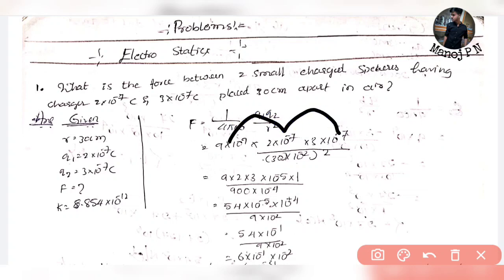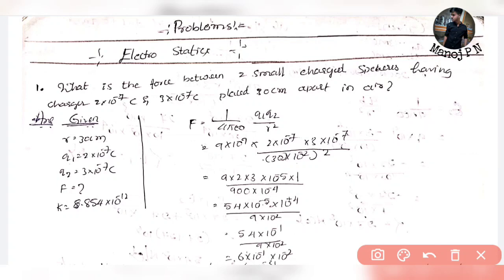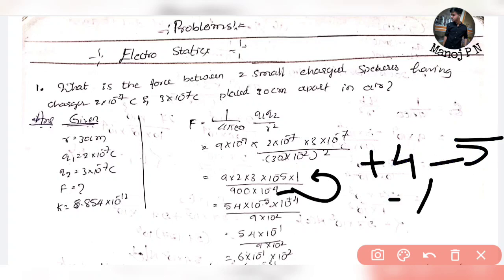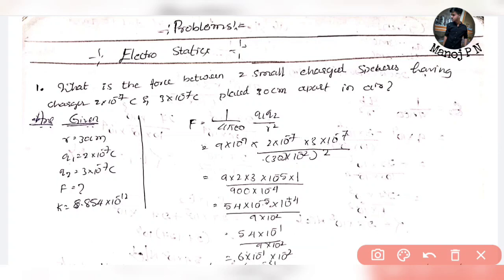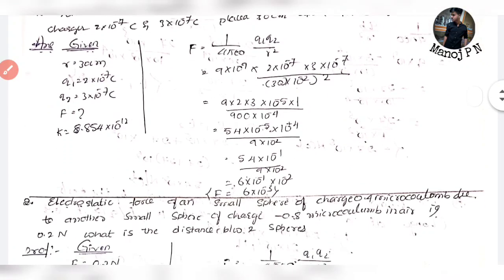Now computing: 10⁻⁷ × 10⁻⁷ = 10⁻¹⁴, then 10⁻¹⁴ × 10⁹ = 10⁻⁵. Multiplying 9×2×3 = 54, so 54×10⁻⁵ in the numerator. For the denominator: (30×10⁻²)² = 900×10⁻⁴. So 54×10⁻⁵ / 900×10⁻⁴ = 54/900 × 10⁻¹ = 6×10⁻³ N. The force is 6×10⁻³ N.